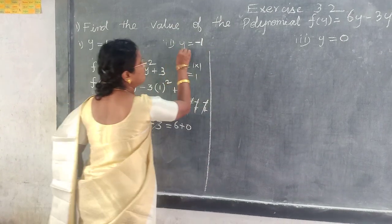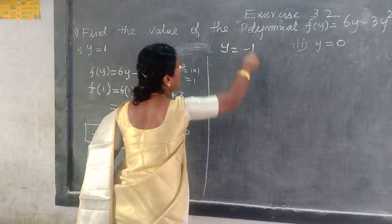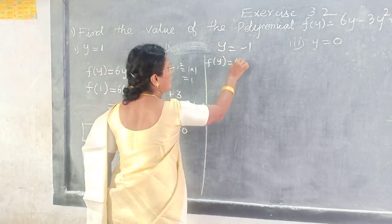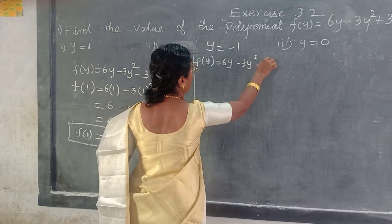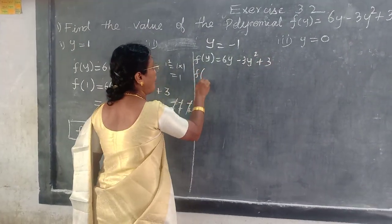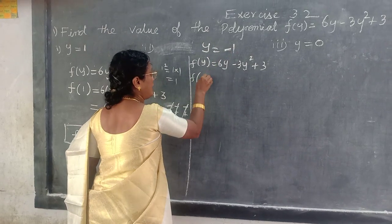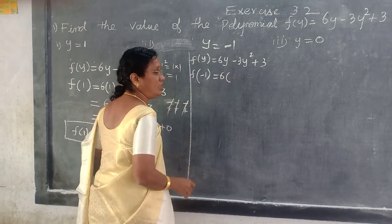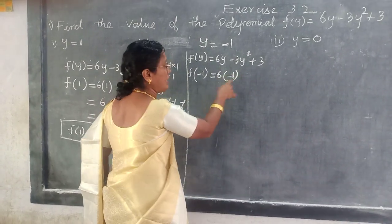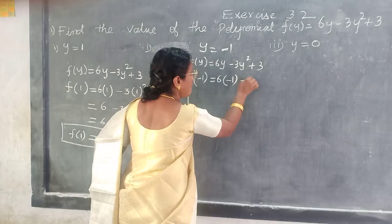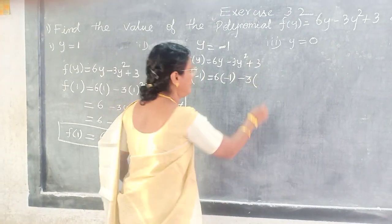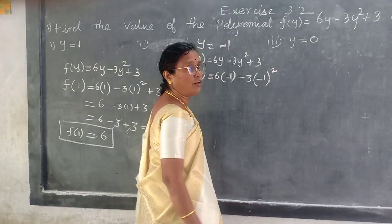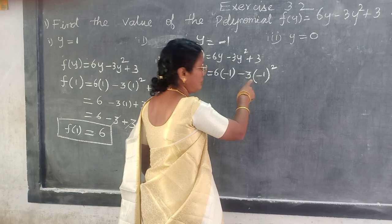And the second one. What is it? Y equal to minus 1. So what is the polynomial they have given? F of minus 1 equals 6y minus 3y squared plus 3. So f of — in the place of y, what are you going to write? Minus 1. F of minus 1 equal to 6 into minus 1, minus 3 into minus 1 squared. Plus 3.